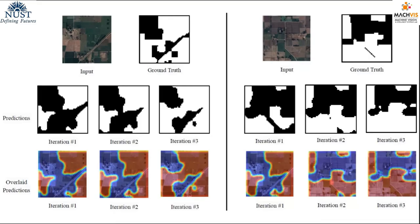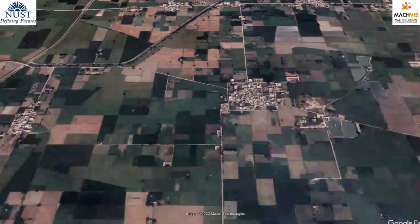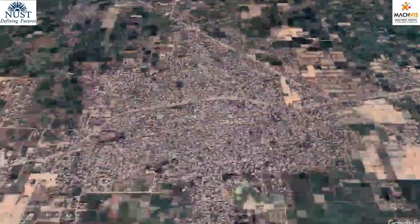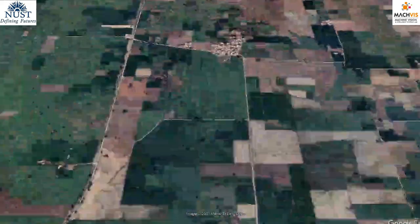The crop maps generated from this framework, which are displayed here, show that the crops are precisely identified. The field boundaries are also accurately delineated, even though these underdeveloped countries exhibit small-scale fields and a diverse distribution of crops within a small area.